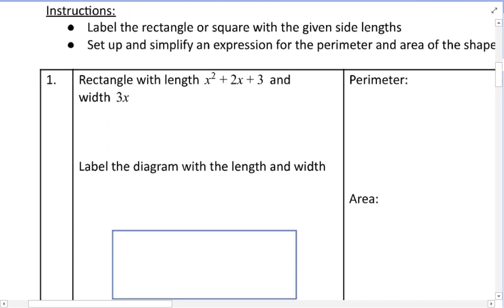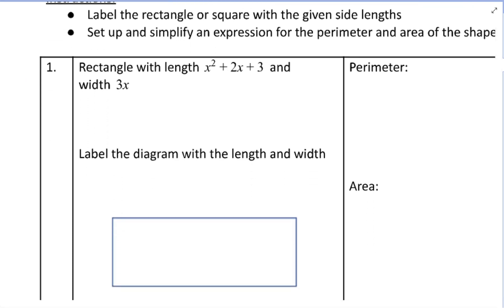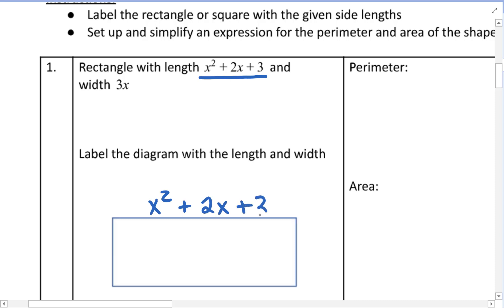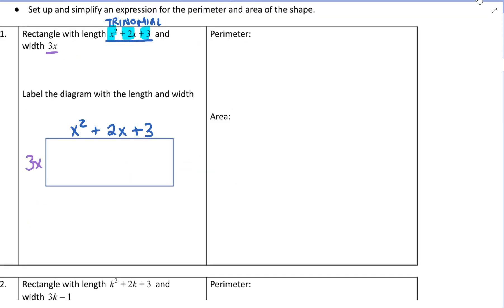Label the rectangle with the given side lengths, then set up and simplify an expression for the perimeter and area. The rectangle has a length of x squared plus 2x plus 3 — that's a trinomial because it has three terms. The width is 3x, which has one term, so it's called a monomial.